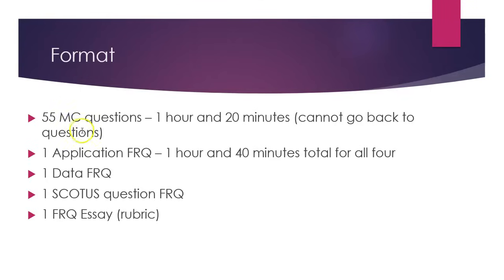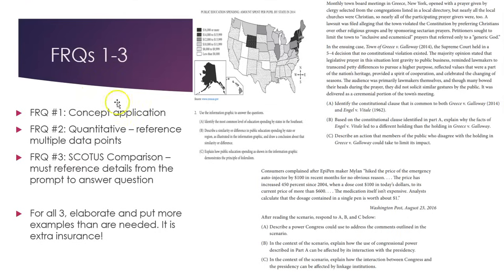Let's get into the format: 55 multiple choice questions, and then you have your four FRQs. In terms of the first three FRQs, the concept application, you will be asked to basically take some type of concept you've learned and apply it to a scenario as you see right here. In FRQ number two, the quantitative, referring to interpreting data — it might be in a chart or an infographic — and you have to basically explain the data using the concepts and information you've learned from AP Gov.